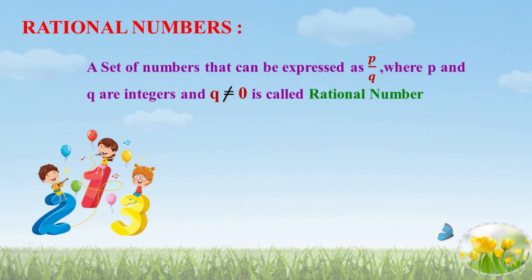The denominator must not be 0. You know very well that when we divide a number by 0, the answer is not defined. That's why the condition is given. According to this definition, let me give some examples. Students, you should be able to find whether a given number is a Rational Number or not.